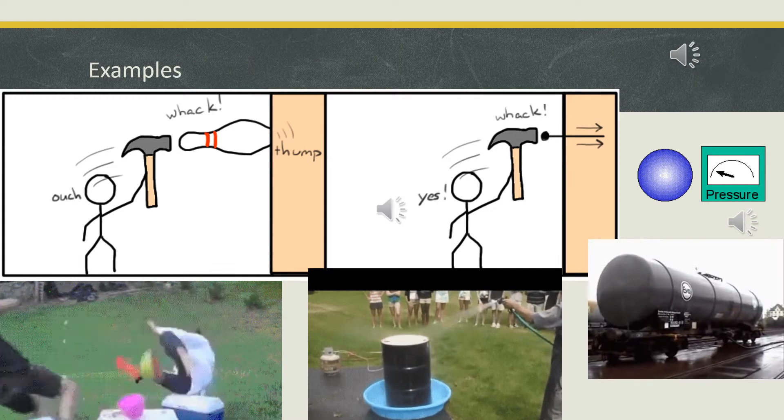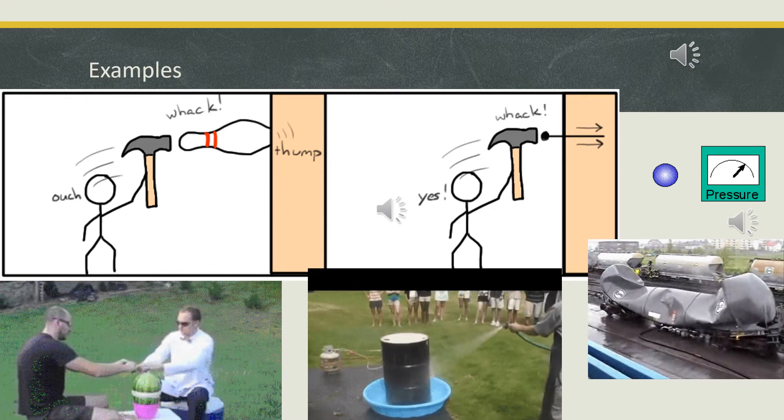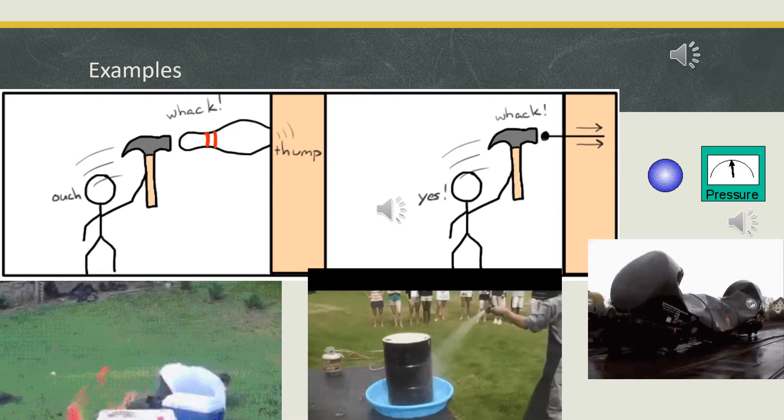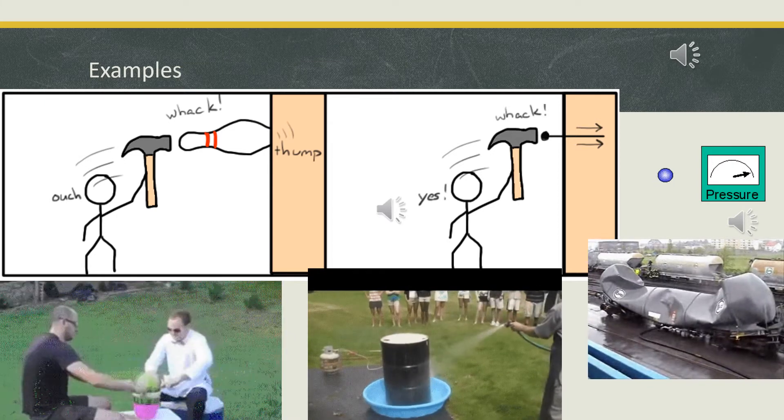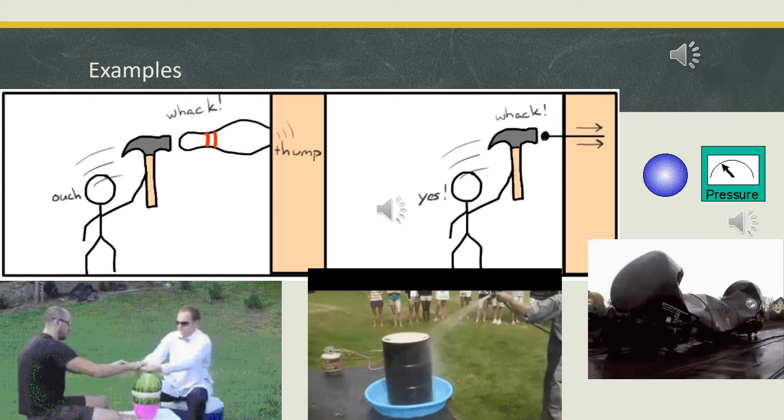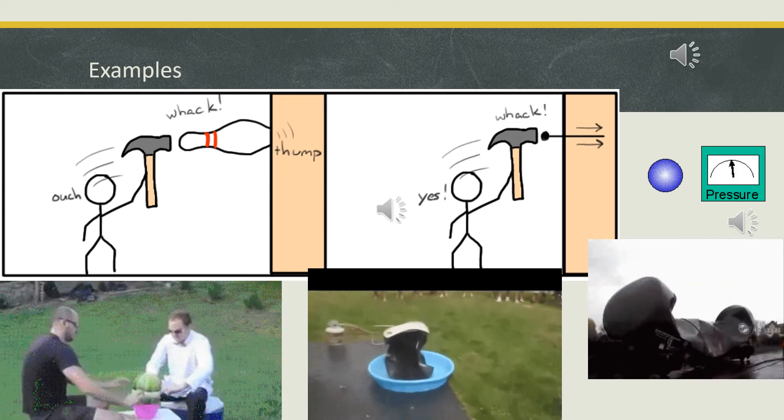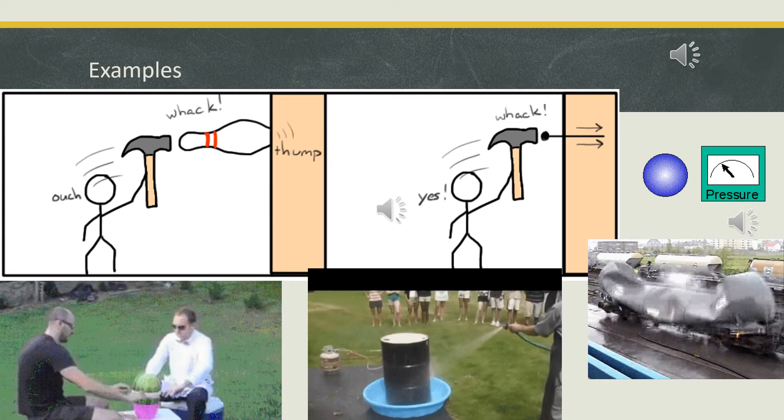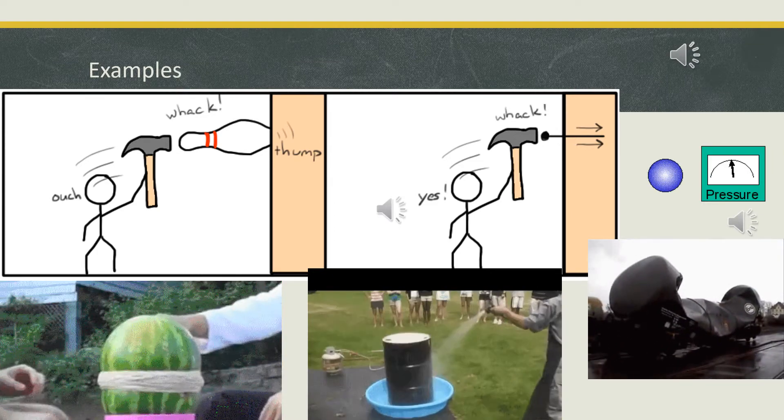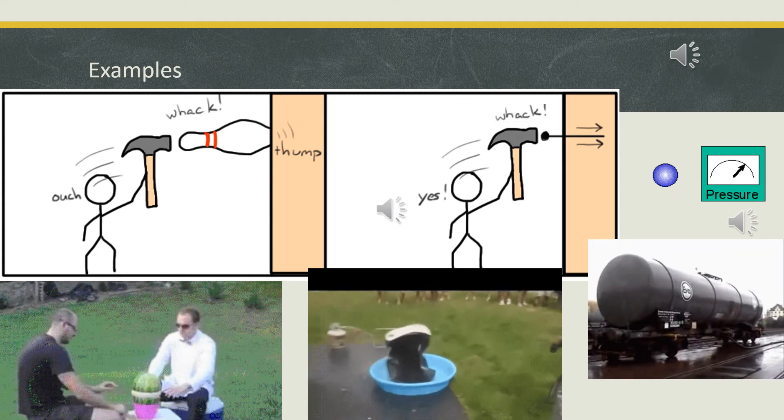In another example, look at the watermelon. These two gentlemen are trying to cover it with elastic rubber bands. But what they actually did is they are applying a huge amount of pressure at a single point on the watermelon surface. Because of the force applied by many rubber bands on a small area, it burst into pieces. Similarly, look at the drum. This drum is explaining atmospheric pressure.